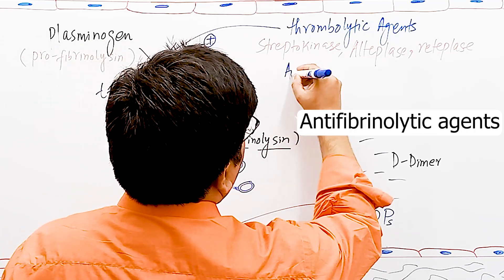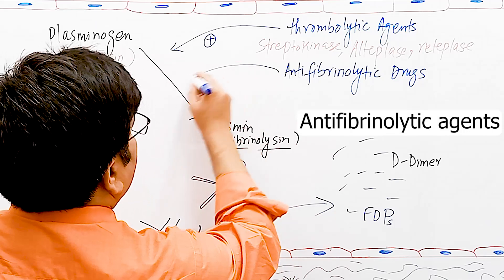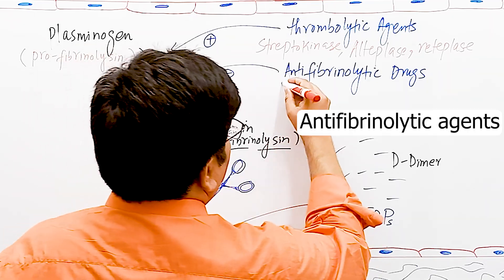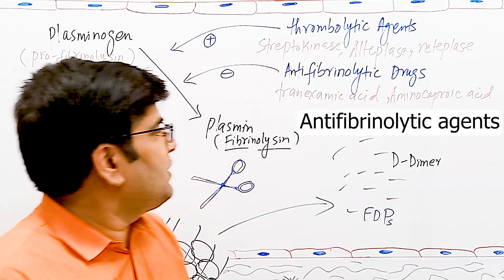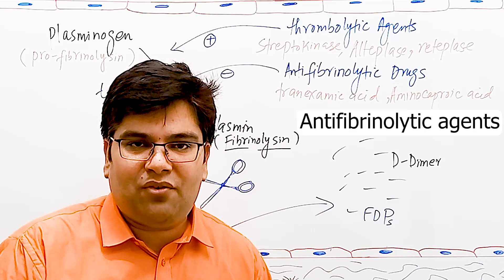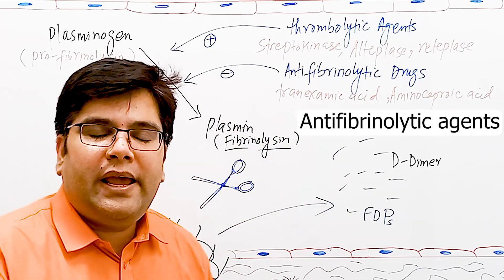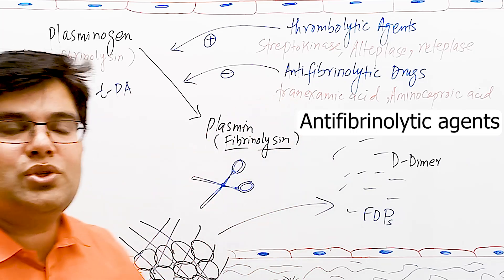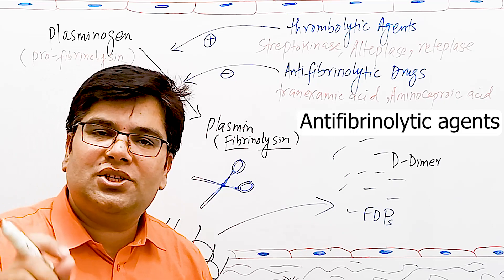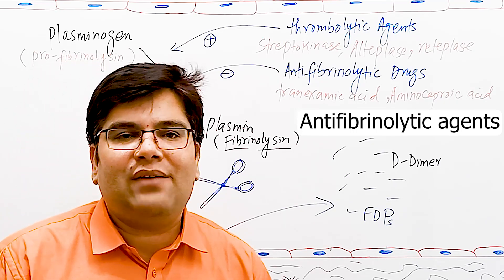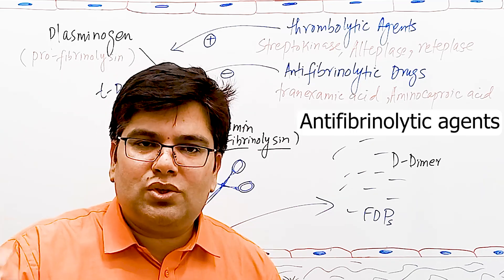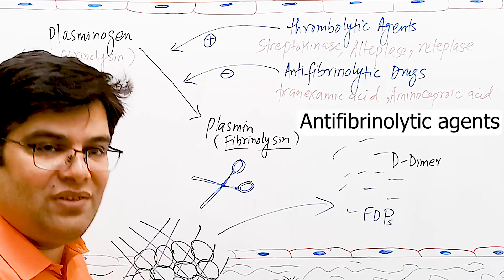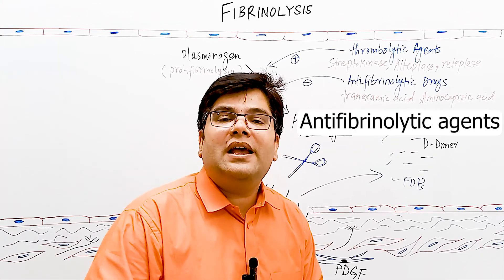There is another group of drugs called anti-fibrinolytic drugs. These drugs inhibit the conversion of plasminogen to plasmin. Important examples are tranexamic acid and aminocaproic acid. Tranexamic acid is available in Pakistan by the name Transamine. Because these drugs block the conversion of plasminogen to plasmin, plasmin is not formed and the fibrin clot will not break. The clot stays for a longer period of time. These drugs can be used in conditions where we want to prevent heavy bleeding — for example, if a woman is having heavy menstrual bleeding, tranexamic acid can decrease the breakdown of the clot, so the clot remains and bleeding stops.